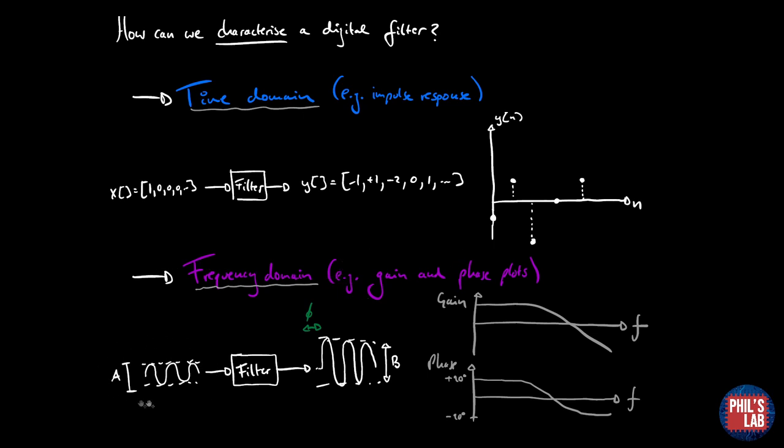For a digital filter we might look at the impulse response in the time domain. Another way of looking at a filter is characterizing it by its frequency domain properties for example the gain and phase plots. If I plot this response I can do what's called a bode plot, a frequency domain plot which is the gain versus the frequency as well as the phase versus the frequency. These are two ways we can characterize our filters.